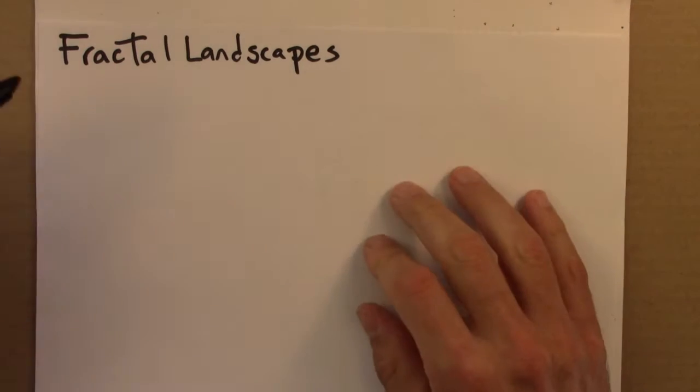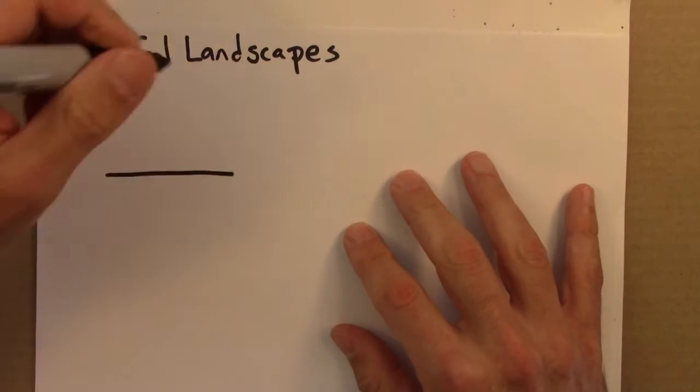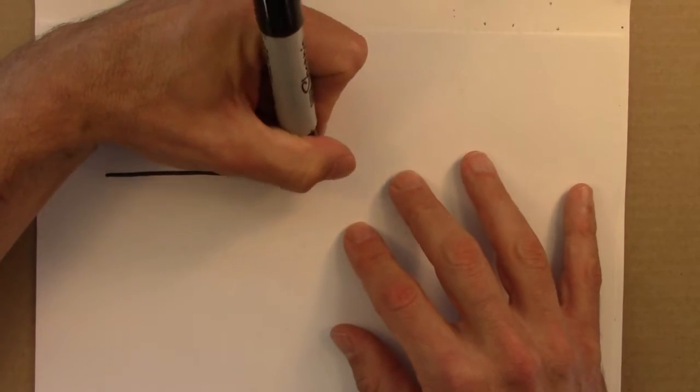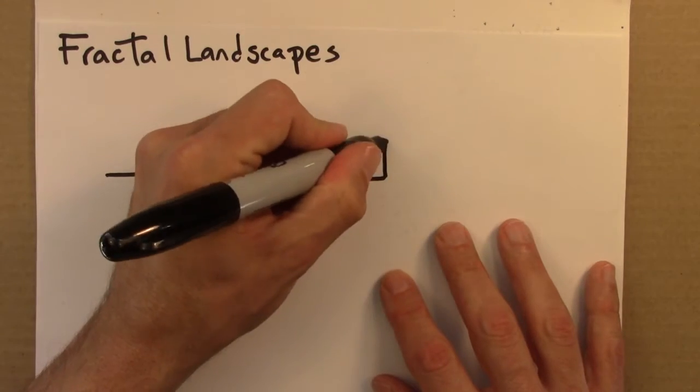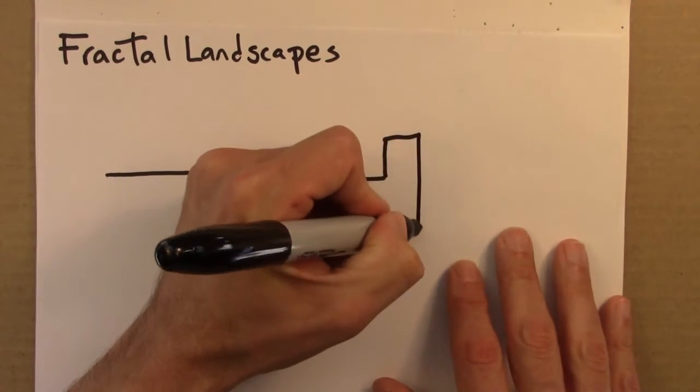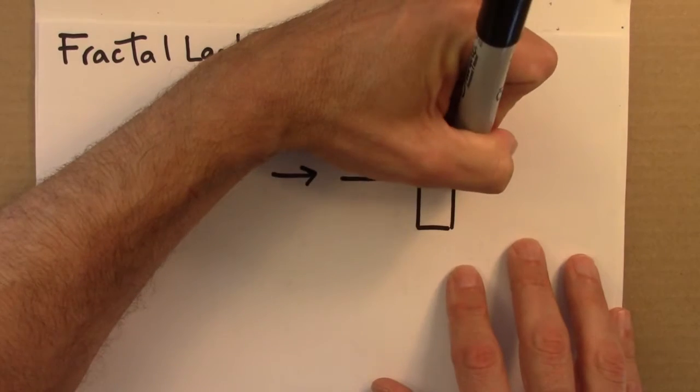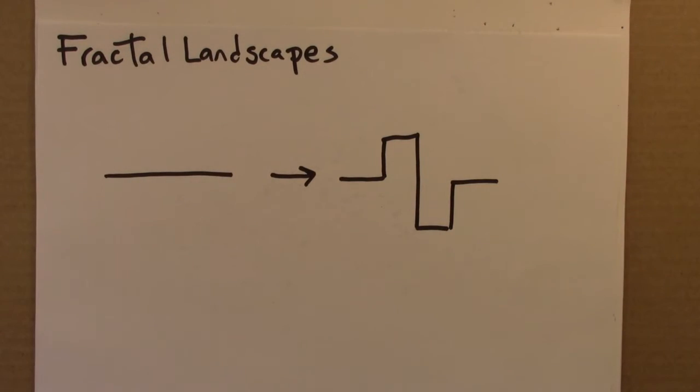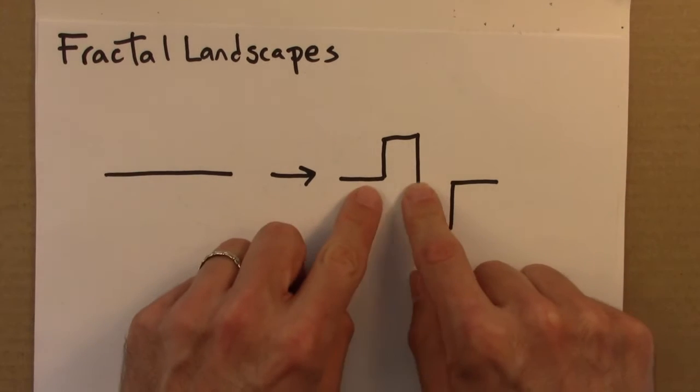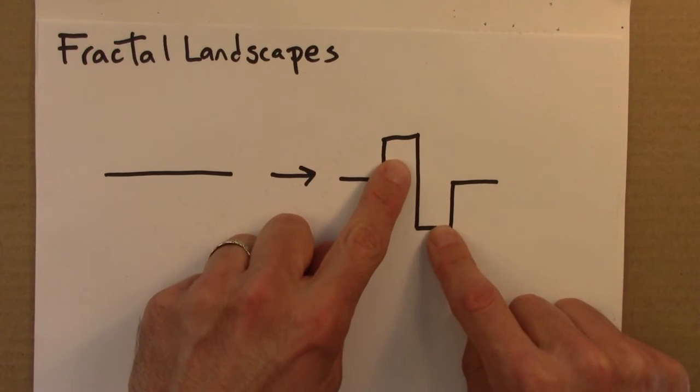So you'll recall, first sticking with lines again for just a second, one of the variations on the Koch curve was to do this: to start with a line and then replace it with a line that bumps up and bumps down in this sort of square fashion.